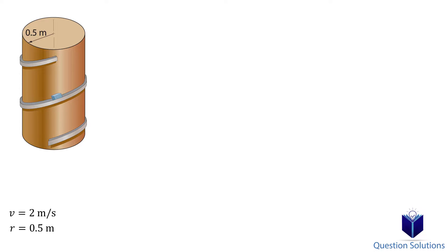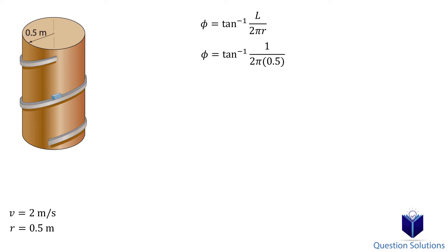Let's think about this problem a bit. For every revolution of the ramp, it descends 1 meter, so we need to find the angle of inclination. For that, we can use phi equals tan inverse of l over 2 pi r, where l is the vertical distance that drops per revolution and 2 pi r is the circumference of the cylinder.